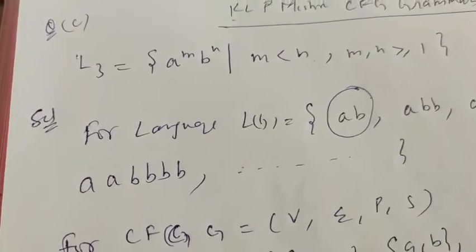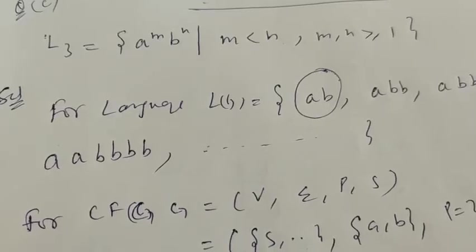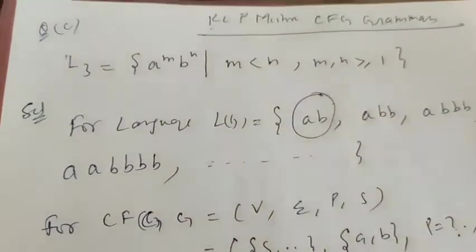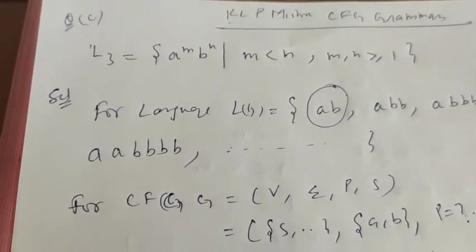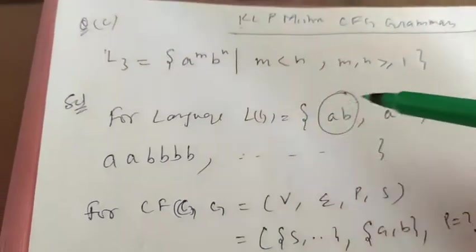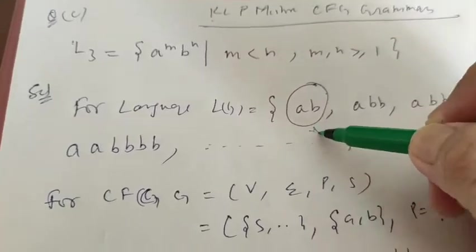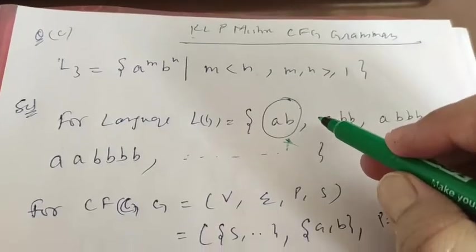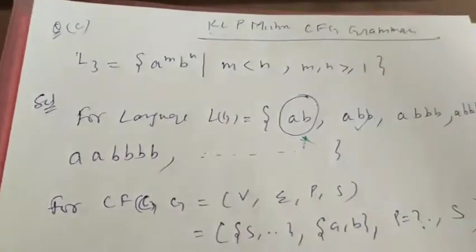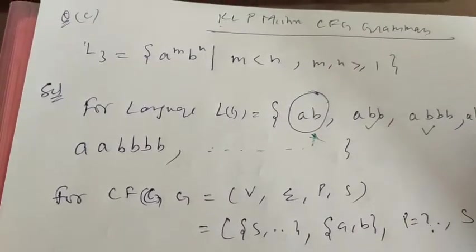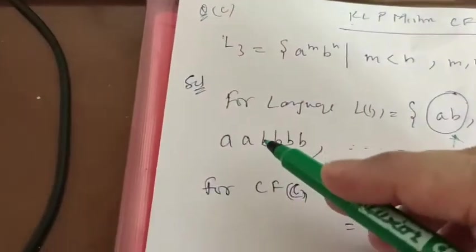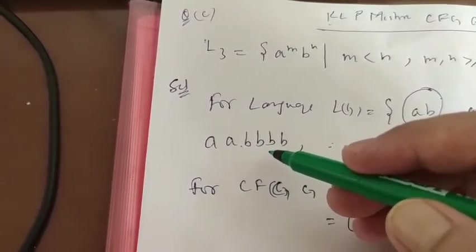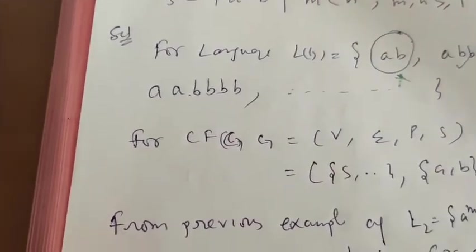So for the language LG, we make the language. First language we made that is by default, that is equal number of value of m and n, that is 1, that is a, b. We will not consider it because I explained in previous lecture also. Now m is less than n, so a double b, then a triple b, a 4 times b, and so continue this. Double a, m value 2, and then n value 4. So m and n are both different.